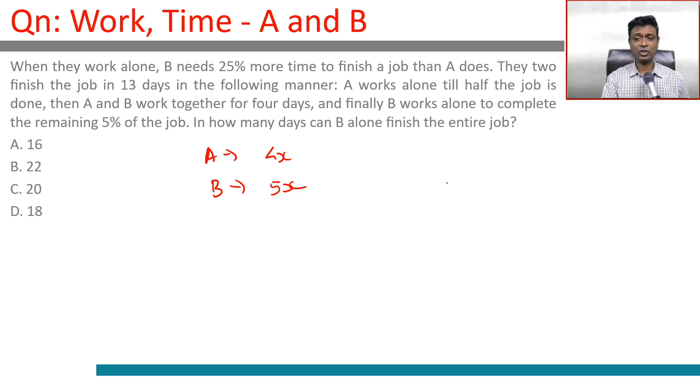A works alone till half the job is done, so A works alone for 2x days. Then A and B work together for 4 days. And finally, B works alone to complete the remaining 5% of the job.